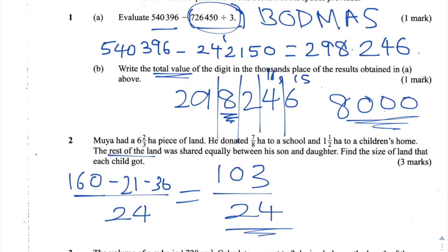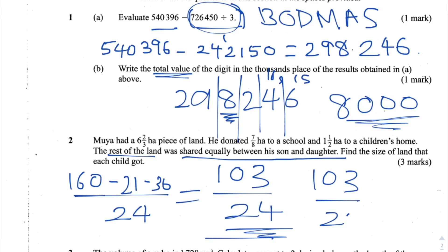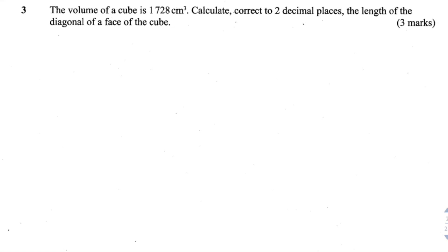Since Muya shares the remaining land equally between his son and daughter, we divide 103 over 24 by 2, which is the same as doubling the denominator, giving 103 over 48. That's our answer for question 2.